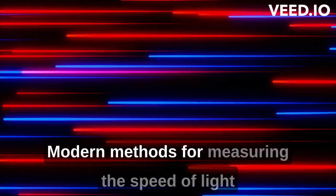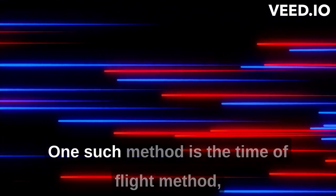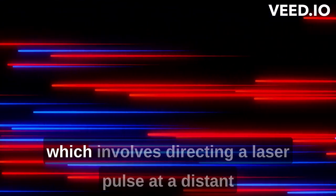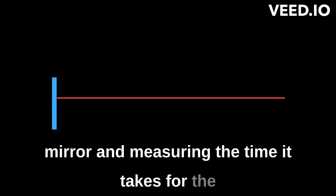Modern methods for measuring the speed of light use lasers and highly precise timing devices. One such method is the Time of Flight method, which involves directing a laser pulse at a distant mirror and measuring the time it takes for the light to make the round trip.